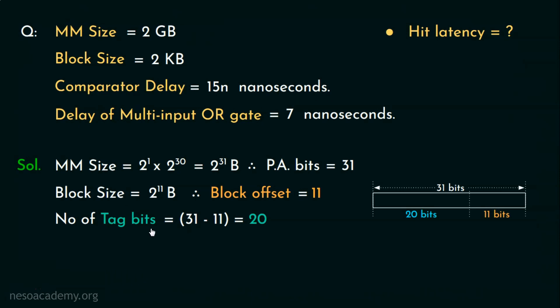The comparator delay has been given as 15N nanoseconds and we already know this N signifies the number of tag bits. Therefore, the hit latency we can calculate as 15 multiplied by 20 where 20 is the number of tag bits.